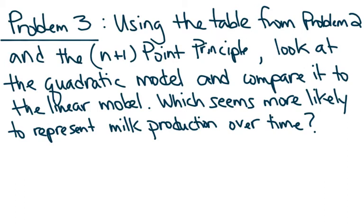Just because an equation best fits the data of a model doesn't necessarily mean it's the best representation of a model. This is where you need to use your common sense and reasoning skills. So in problem 3, we're going to use the same table from problem 2. But now we're going to use the n plus 1 point principle, which said that since we have three ordered pairs, that a degree 2 polynomial would be the best model. That means a quadratic model.